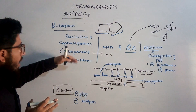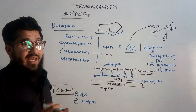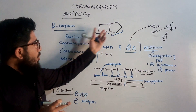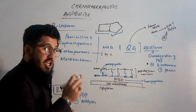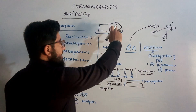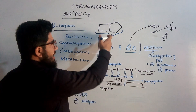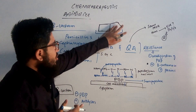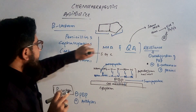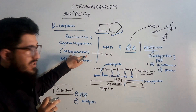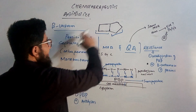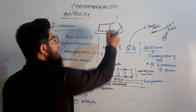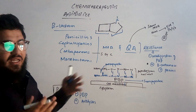The beta-lactam ring is present in all, but there is a change regarding the thiazolidine ring. Penicillins have both rings, whereas cephalosporins have the same rings but with a change in the thiazolidine ring — a double bond is available at carbon number two and three. Regarding the carbapenems, the sulfur in the thiazolidine ring is replaced by carbon, along with some other alkyl chains.